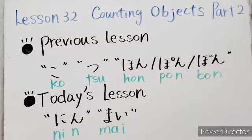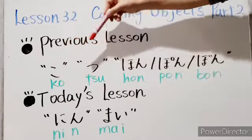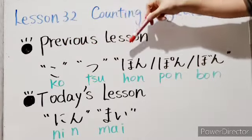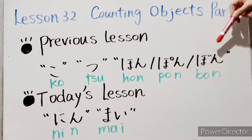Last time we learned how to count objects by using ko, tsu, hon, pon, bon.